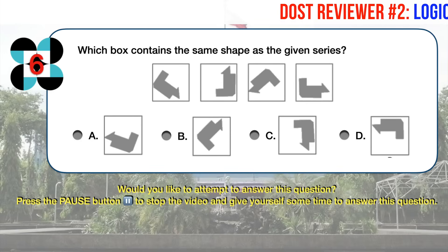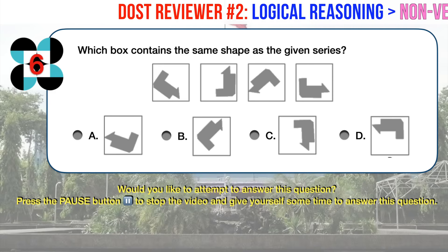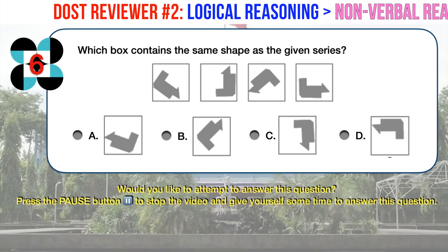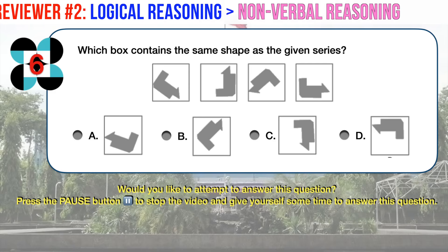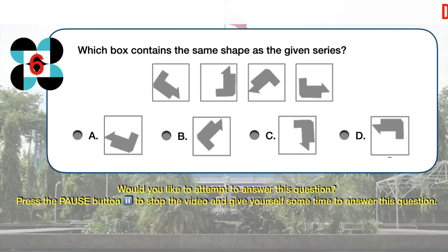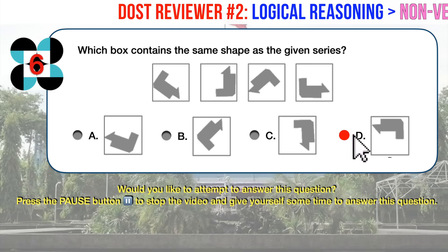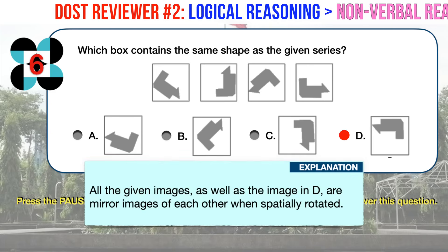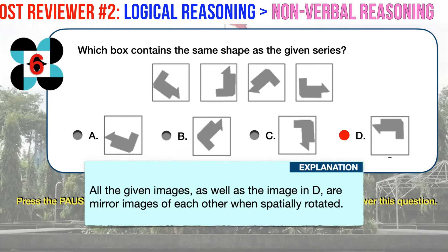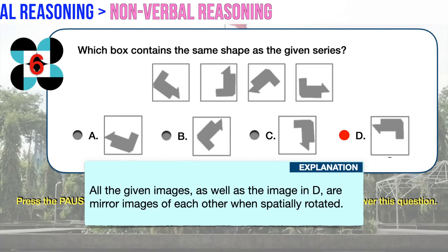Nonverbal reasoning Number 6. Which box contains the same shape as the given series? The correct answer is D. When the given images are spatially rotated, they are all mirror images of the image in answer choice D. The same cannot be said of the images in answer choices A, B, and C.